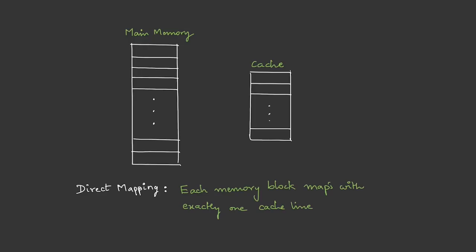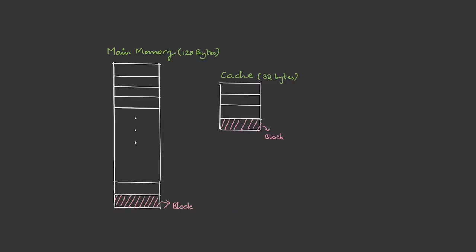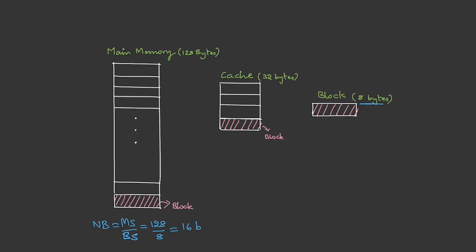To have a better understanding, let me give you an example. Imagine our system has a main memory of size 128 bytes and cache size 32 bytes. The block size in main memory as well as in the cache is the same. For convenience, let me draw it separately. The block size is 8 bytes. From this data we can calculate the number of blocks and the number of cache lines. Number of blocks is memory size divided by block size, so 128 divided by 8 equals 16 blocks, written as 2 power 4 blocks, so we need 4 bits for block indexing.